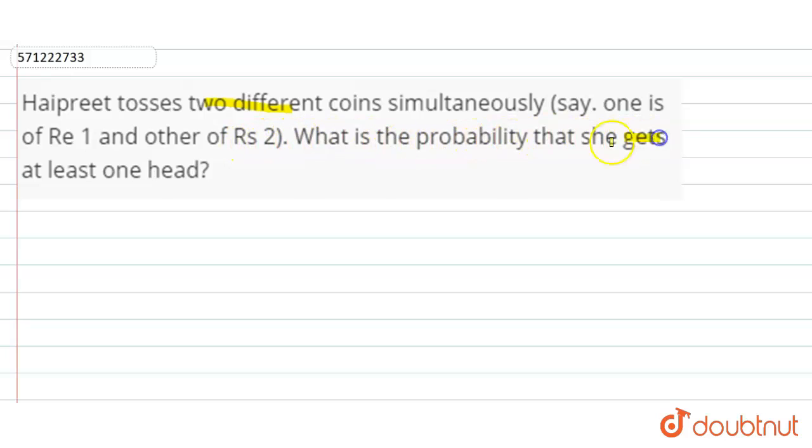So firstly we write all the possible outcomes when two coins are tossed simultaneously. So total number of outcomes when two coins are tossed simultaneously will be...